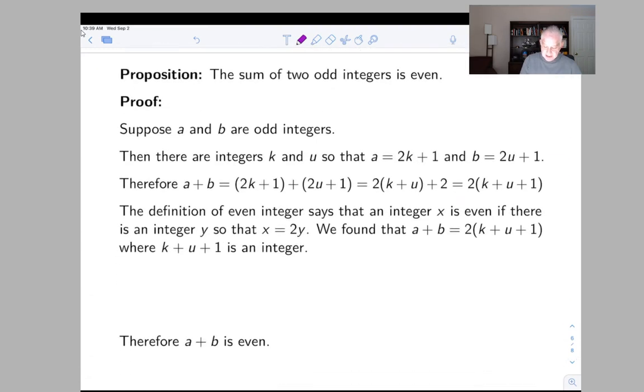So we make that explicit. The definition of even integer says that an integer X is even if there is an integer Y so that X equals 2Y. We found that A plus B equals 2 times K plus U plus 1, where K plus U plus 1 is an integer. And now finally this step is clear because we've applied the definition. A plus B is even.